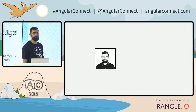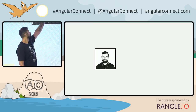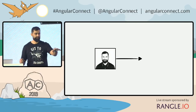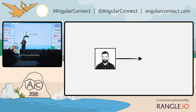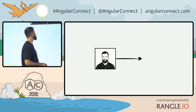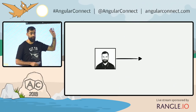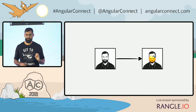What it does: take any image, detect the face in the image, detect the emotion in the face, and then find the appropriate emoji and place it on the face.